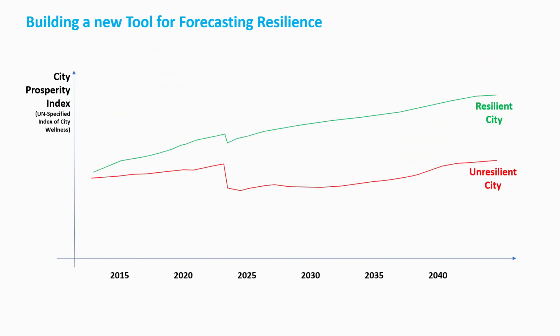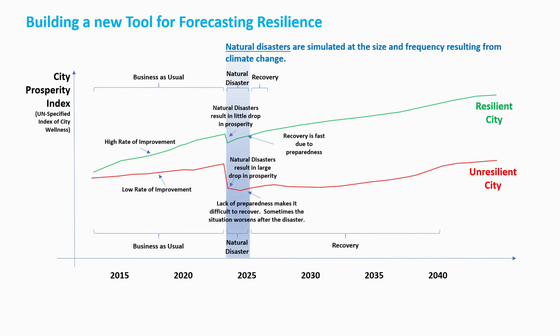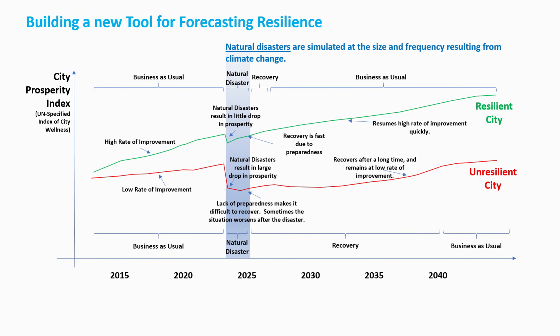We asked: what is going to be the difference between a resilient city and an unresilient city? During business as usual times, a resilient city has a culture of preparedness, so it's probably going to become more productive and improve more rapidly than the unresilient one. When a disaster actually occurs, both cities are going to take a hit, but the resilient city takes a smaller hit compared to the unresilient one. In terms of recovery, the resilient city recovers very quickly, whereas the unresilient one — there's a 20-year timeframe there — and that's not unrealistic.